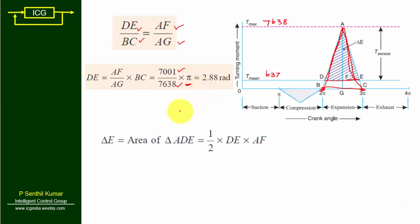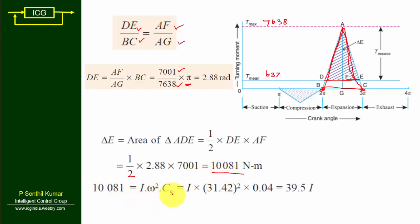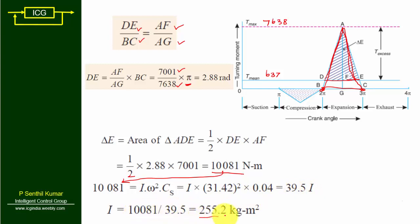ΔE equals the area of triangle ADE equals (1/2)·DE·AF equals (1/2) × 2.88 × 7001, giving ΔE equals 10081 Newton meters. Applying ΔE equals I·ω²·CS, with ω equals 31.42 rad/s and CS equals 0.04, we solve for I. From 10081 equals I × 31.42² × 0.04, we obtain the moment of inertia I of the flywheel.